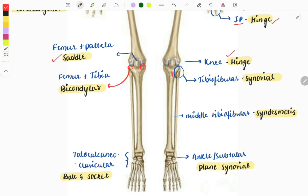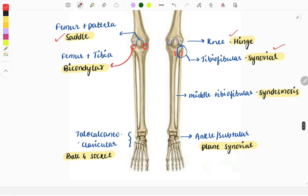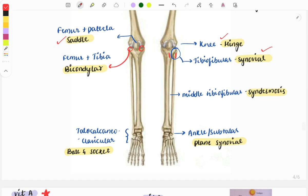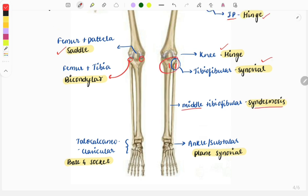The joint between the tibia and the fibula, that is the tibiofibular joint, which is the synovial type of joint. The upper is synovial and the middle is syndesmosis.